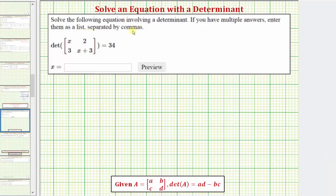We want to solve the following equation involving a determinant. If we have multiple answers, we'll enter them as a list separated by commas. So we have the determinant of this two-by-two matrix equals 34, and our goal is to find the value or values of x that would make this determinant equal to 34.